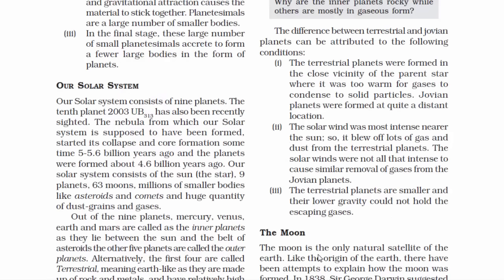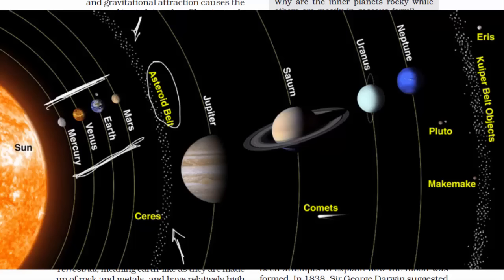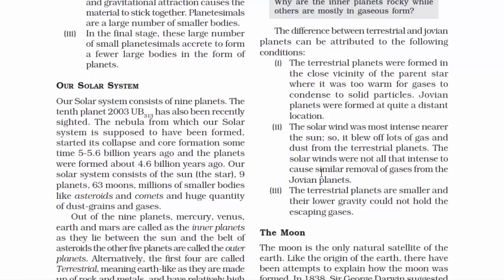The difference between terrestrial and Jovian planets: terrestrial planets are those between the Sun and the asteroid belt, and the ones outside the asteroid belt are known as Jovian planets or outer planets. Most terrestrial planets are full of rock and metal, meaning very little gas and dust. Jovian planets have a lot of gas and dust present.